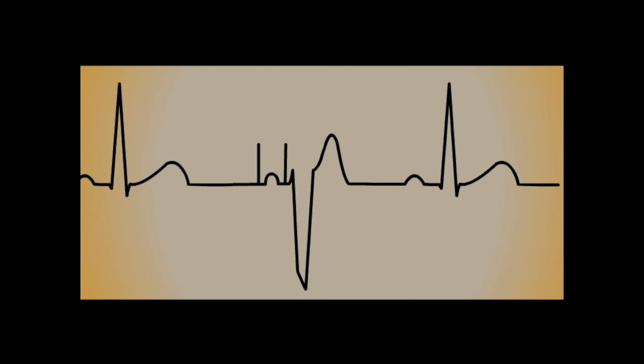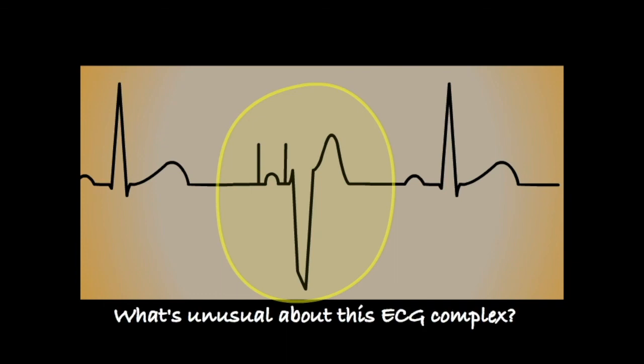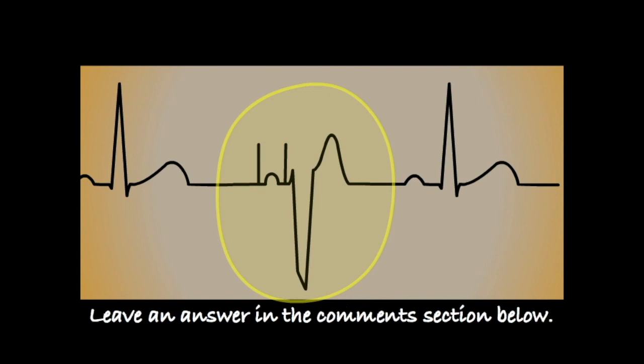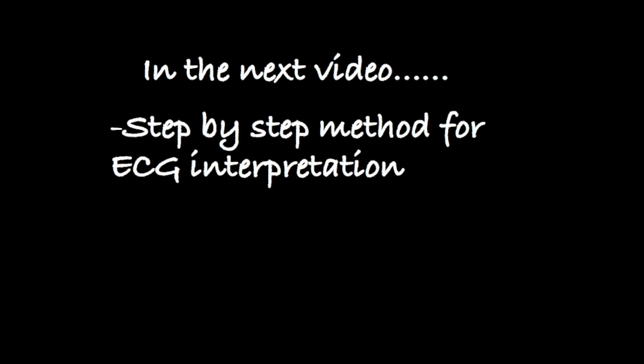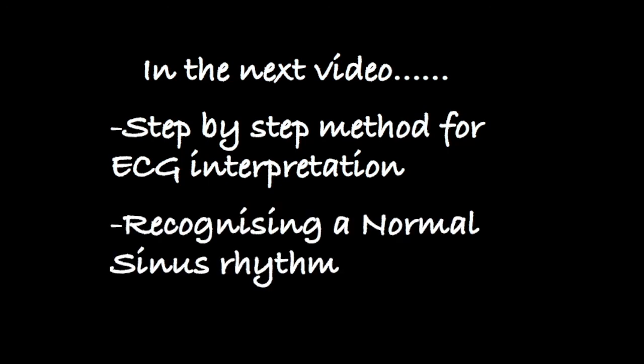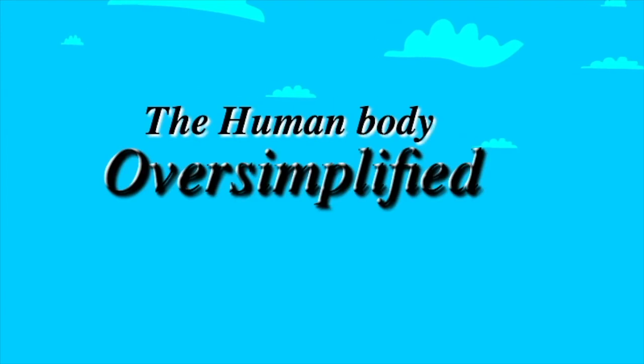Finally, let's see if you have any pre-existing ECG knowledge. Have a look at this ECG complex. Does anything look unusual about it? If you think you know what it is that's a bit strange, then leave an answer in the comment section below. In the next video, we will look at a simple step-by-step method for analyzing and interpreting an ECG. We will then apply this step-by-step approach to a normal sinus rhythm. If you found this video useful, please give it a like. If you're feeling really enthusiastic, leave me a message in the comment section below.